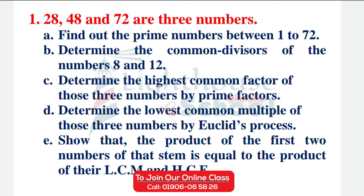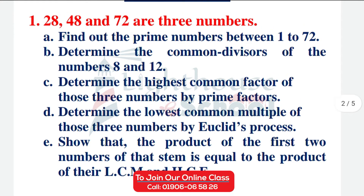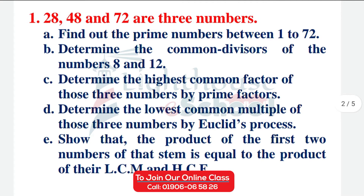Part D: Determine the lowest common multiple of those three numbers by Euclid's process. Part E: Show that the product of the first two numbers of that set is equal to the product of their LCM and HCF.